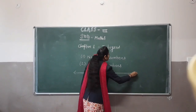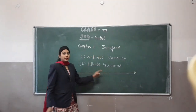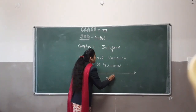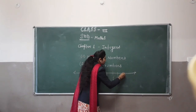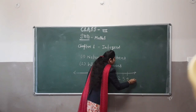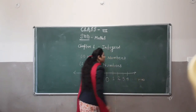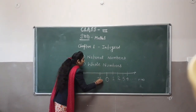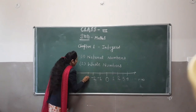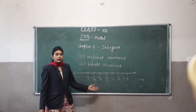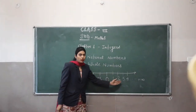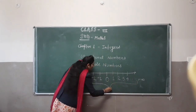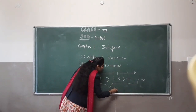On a number line, the center is represented by 0. All positive numbers are on the right side of the number line, and all negative numbers are represented on the left side of the number line. This way, 0, positive numbers, and negative numbers come together and form a set of integers.